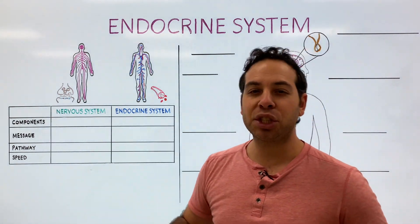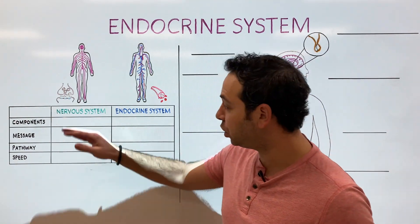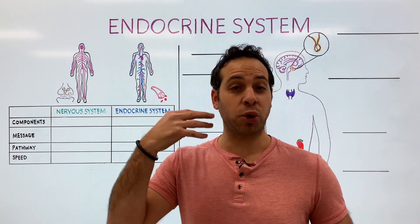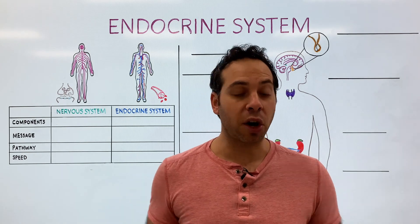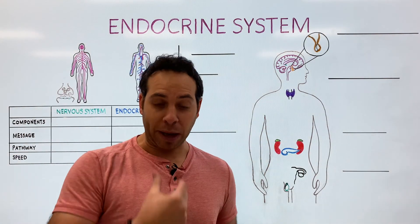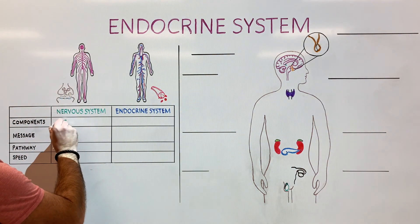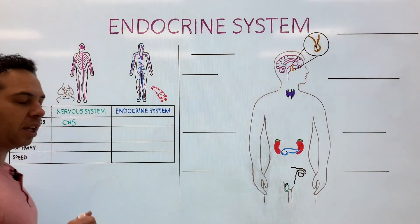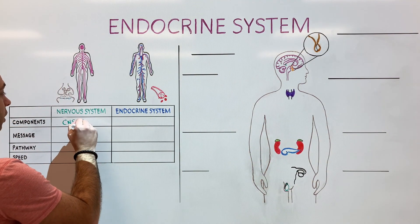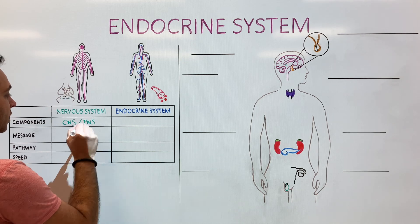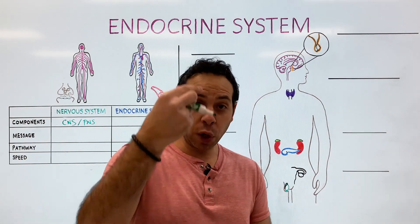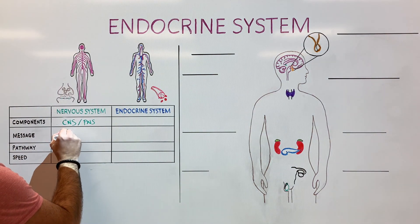Your nervous system is essentially a network of nerves that carries signals throughout the body — whether it's to move my muscles, control thought, or control speech. It is composed of two parts: our brain and spinal cord, which make up our central nervous system, and all the nerves that flow away from the brain and spinal cord, which is our peripheral nervous system, or PNS — peripheral meaning outside. The signal that flows along those nerves is an electrical signal.